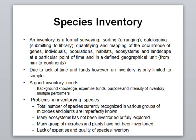A good inventory requires background knowledge, expertise, funds — which is the most important thing — purpose and intensity of the inventory, and multiple performers. Multiple performers means that when you go for a species inventory in a certain area, you may need a statistician, a zoologist for studying animals, and in certain cases even computer programmers. So inventory is not the job of one person; it can be done in group form.